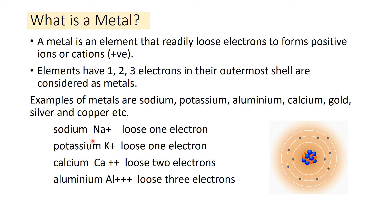Sodium is written as Na. When it loses one electron, it becomes Na⁺ — this plus sign is written in superscript. Looking at the atomic structure of sodium: in the first orbit there are two electrons, in the second orbit there are eight electrons, and in the last orbit there is one electron.